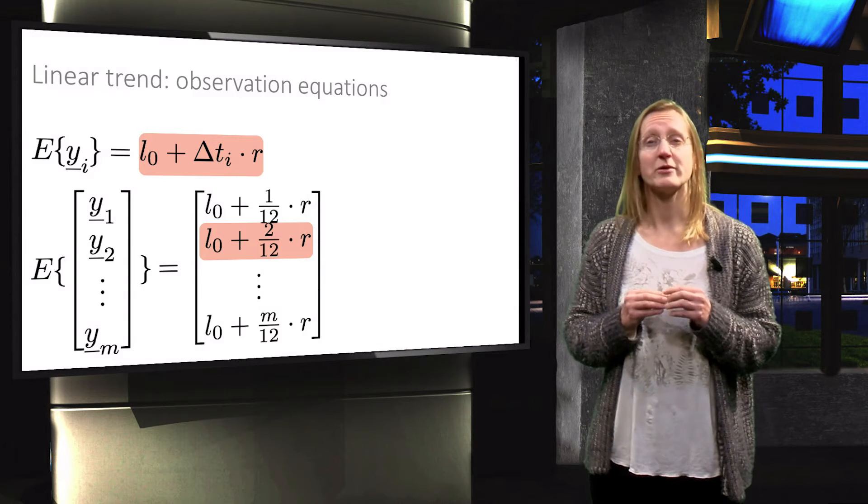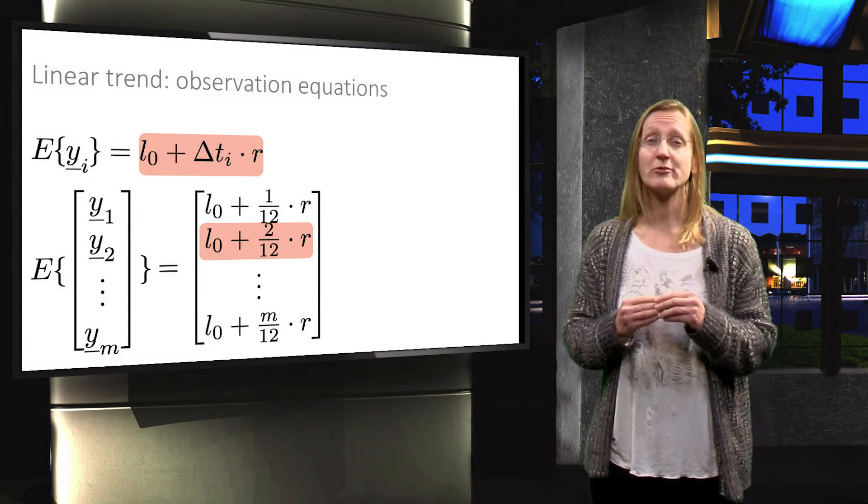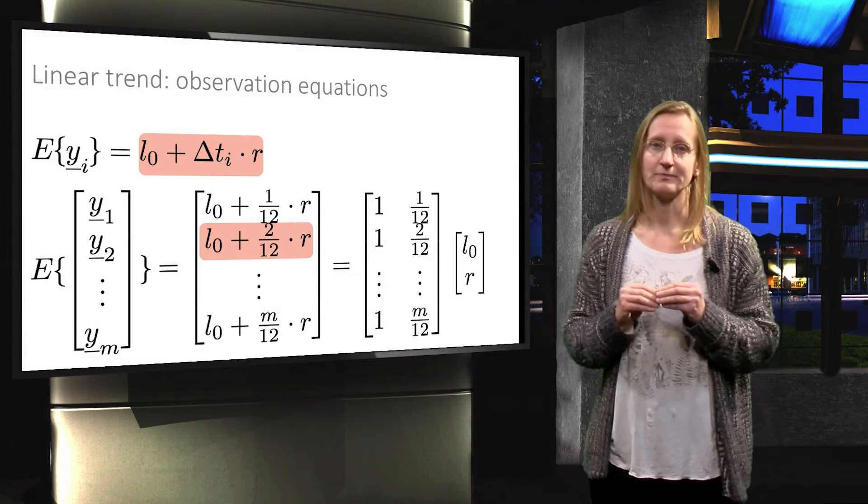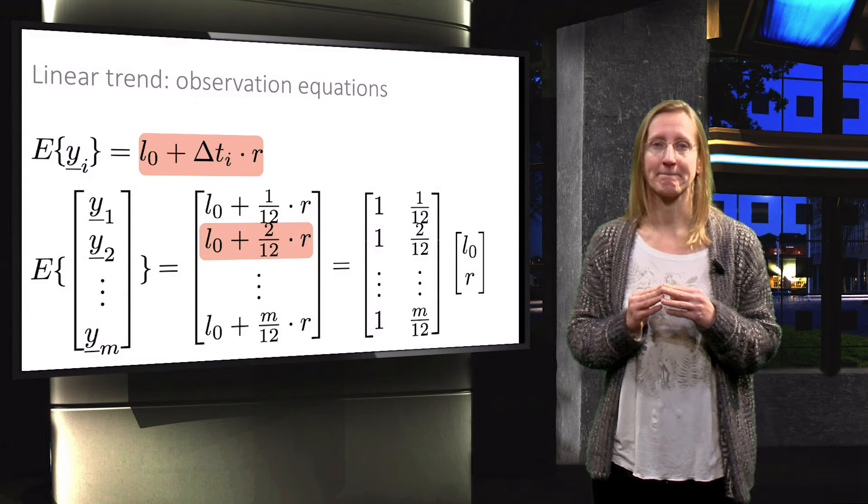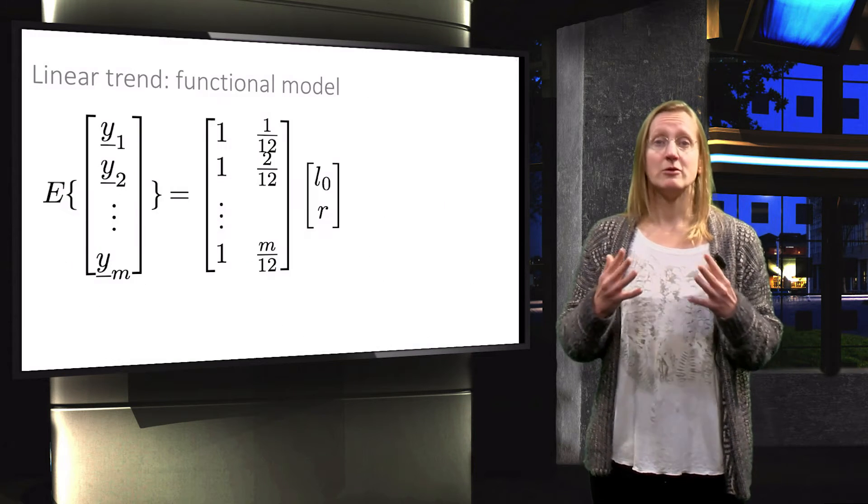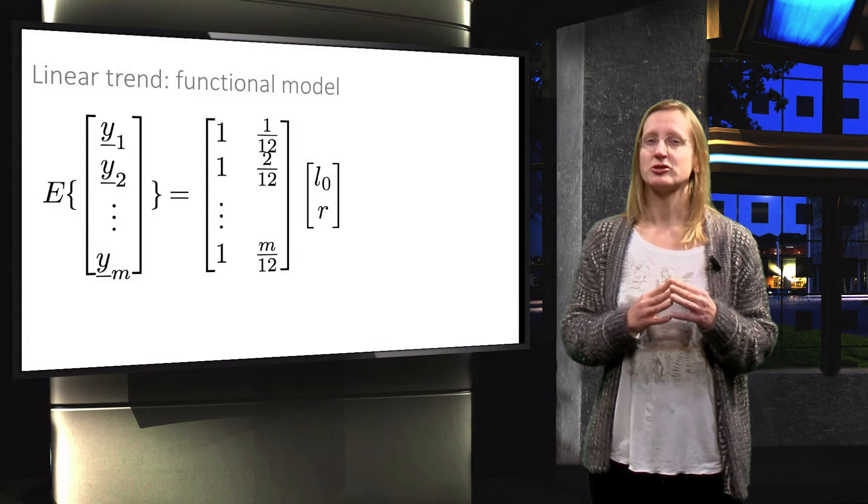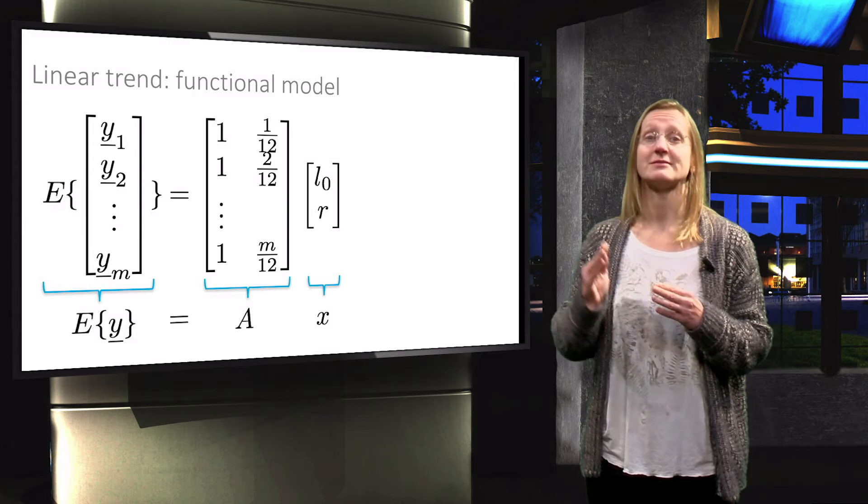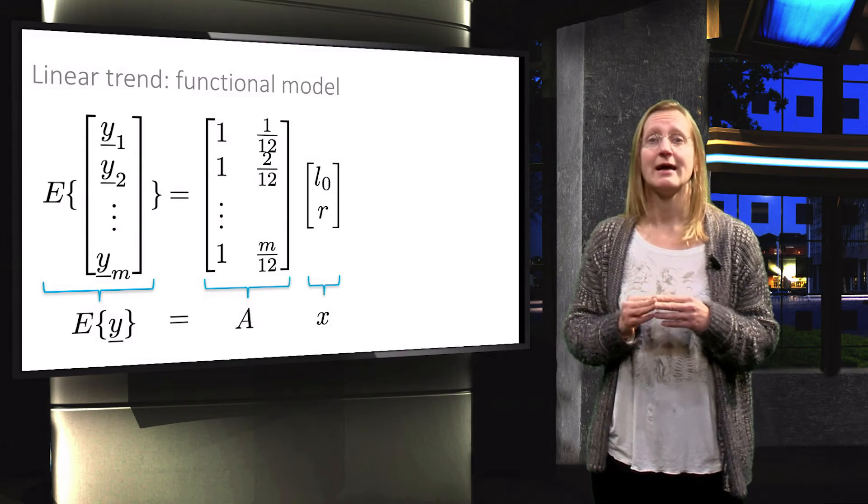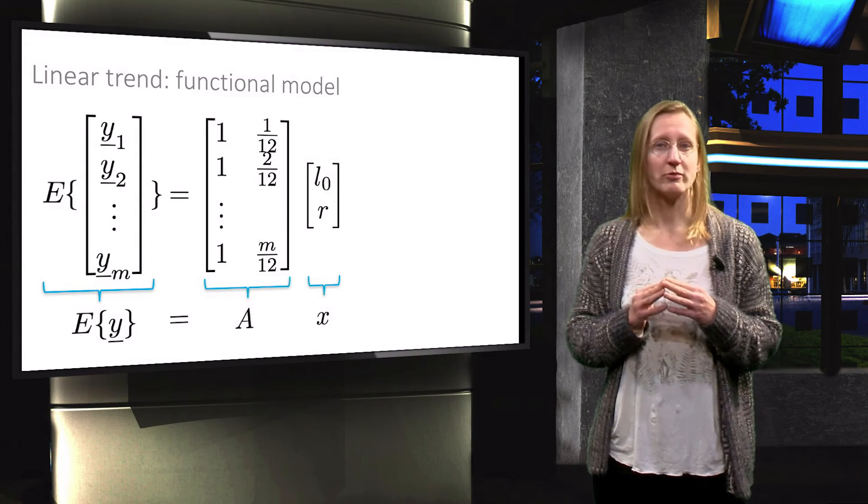This system can be rewritten as a matrix vector product, separating the knowns and unknowns, as shown on the right hand side of the equation. So this is our final functional model, where we distinguish the expectation of the vector of observables, the design matrix A, and the vector x with unknown parameters.